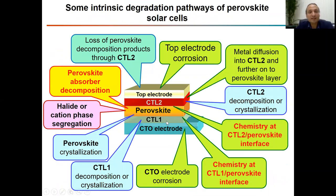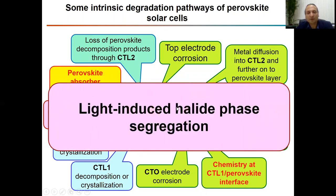There are many different mechanisms which were reported for perovskite solar cells in terms of degradation pathways. Among all these kinds of degradation pathways, I believe that light-induced halide phase segregation is one of the most important.